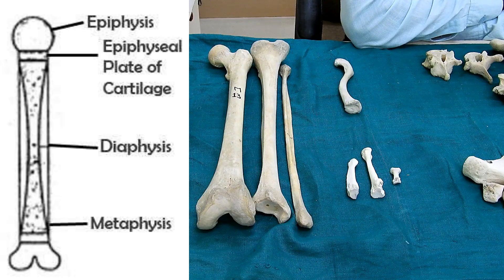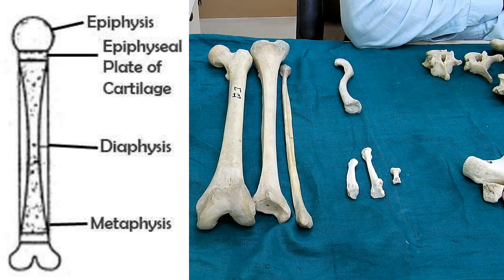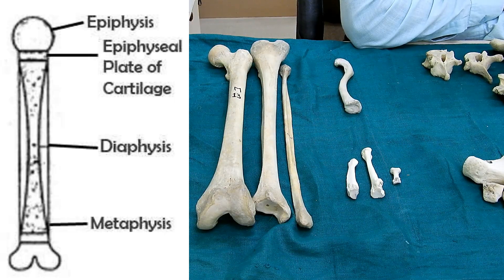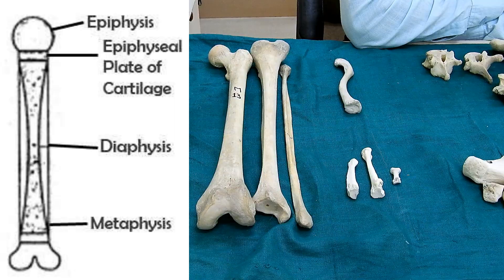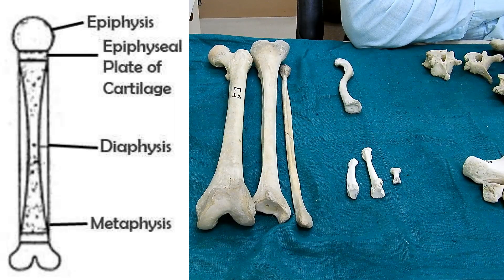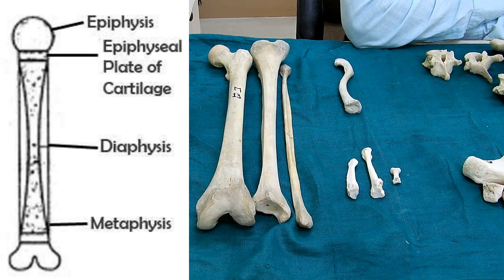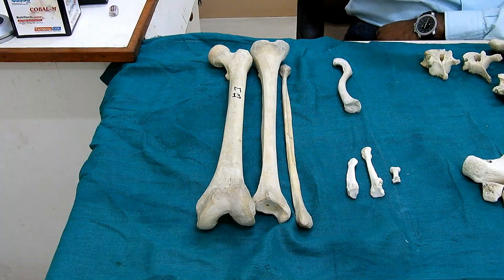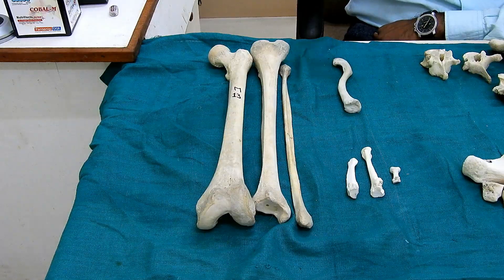The last part in the young long bone is the epiphyseal plate of cartilage, which is situated between the epiphysis and the diaphysis and is responsible for the lengthwise growth of the bone. In the adult, this plate will fuse — it is replaced by bone and fuses the epiphysis with the diaphysis to form the adult long bone.